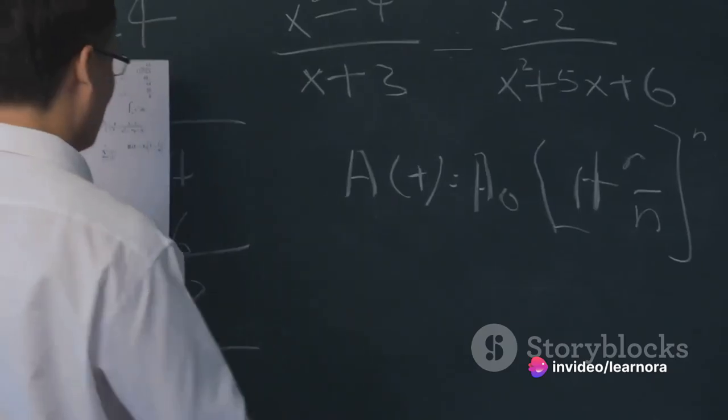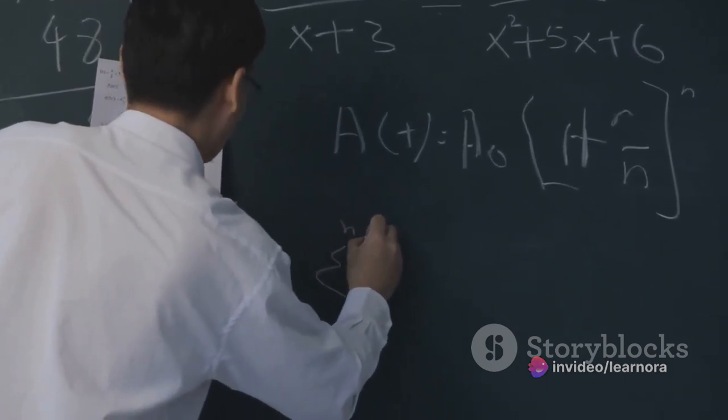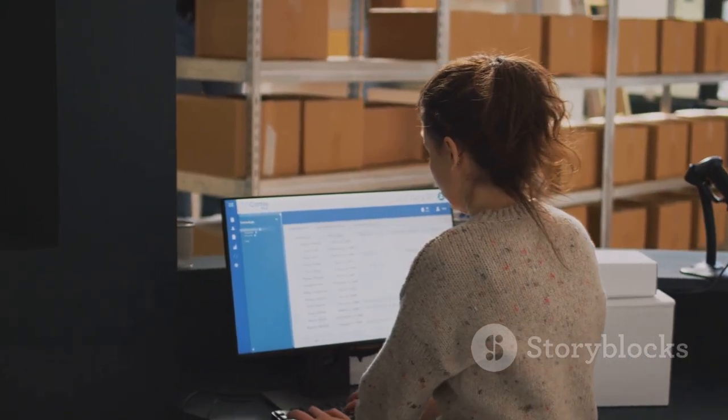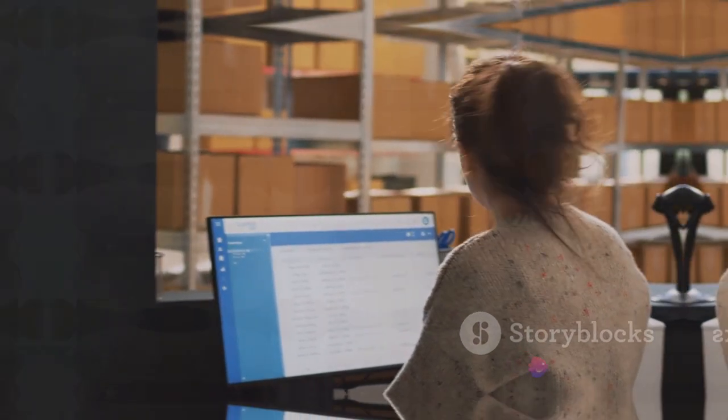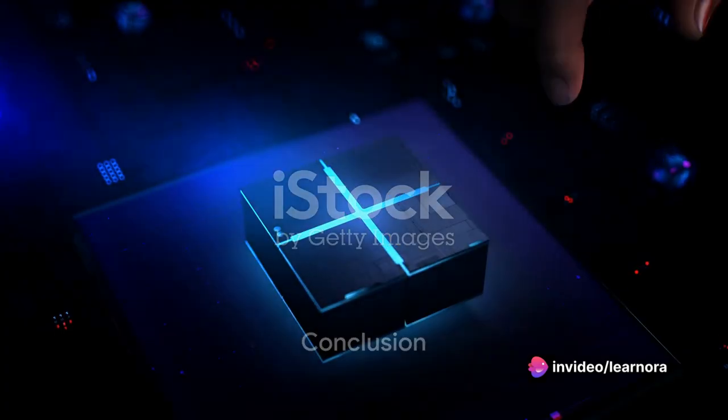The formula here is: material quantity variance equals actual units used minus standard units times standard cost per unit. The production department holds the reins of managing this variance. And where does this direct material variance go? It's typically charged to the cost of goods sold in the period incurred.